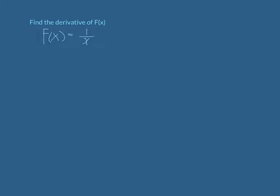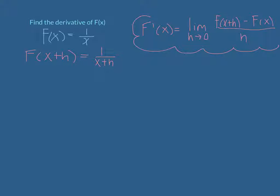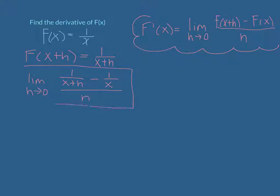Let's find the derivative of f of x equals 1 over x. The first step is to plug x plus h into the function, so f of x plus h equals 1 over x plus h. Now we plug that into the limit definition: f prime of x equals the limit as h approaches zero of f of x plus h minus f of x, all over h. So we have the limit as h approaches zero of 1 over x plus h minus 1 over x, all over h. That is the limit definition for our specific function.